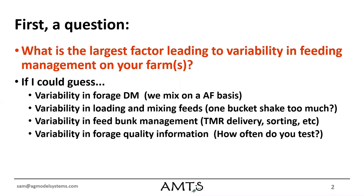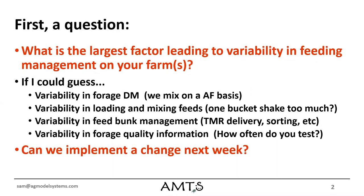There's also variability in forage quality information — how often and how accurately are you testing feeds to make sure you have good information going into your formulation software? The next question I follow up with is: can we actually implement a change in one of these areas within the next week? For the most part, yes — we can always do something better quickly that will see a positive return to the farm if we reduce variability in any of these areas.